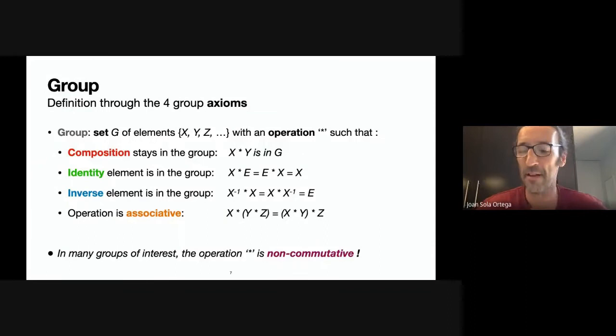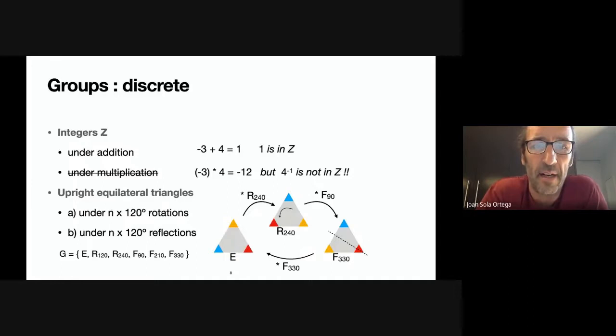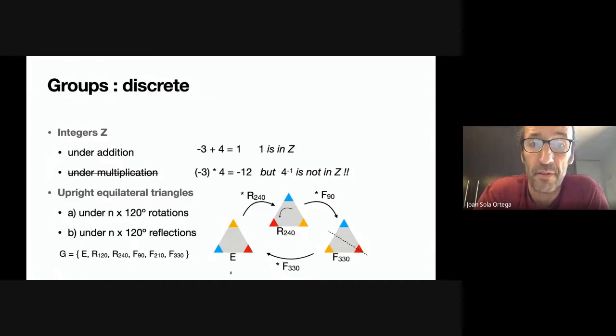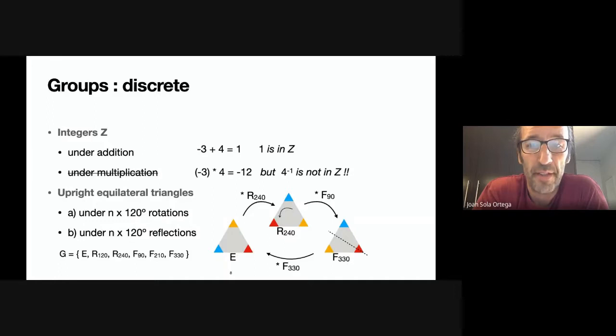Some examples: the integers are a group under addition — if you add integers you get integers, each has an inverse, the operation is associative, and the identity is zero. If you want to take integers under multiplication, you fulfill some axioms — the identity is one — but you don't have the inverse, because for example the inverse of four is not an integer. So integers under multiplication do not form a group.